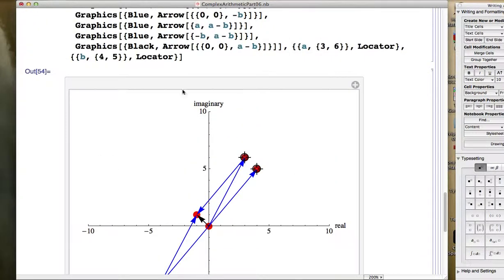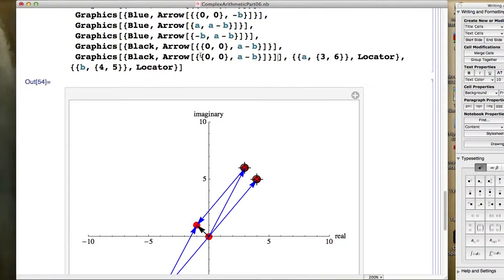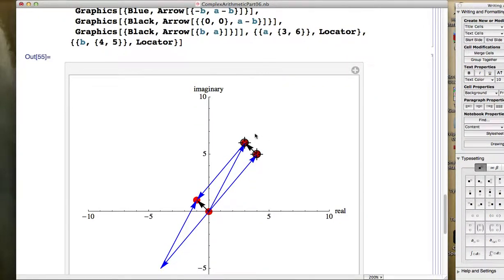And that will give you the same arrow. Starts at 4, 5, which is b. Ends at 3, 6, which is a. There we go. So that black arrow also represents the complex number negative one plus i.